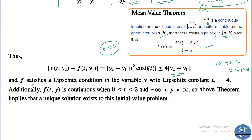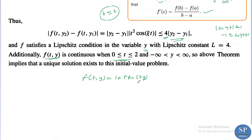Therefore f satisfies the Lipschitz condition in the variable y with Lipschitz constant L = 4. Also, f(t, y) = (1 + t)sin(ty) is continuous for 0 ≤ t ≤ 2 and -∞ < y < ∞, because the trigonometric function sin(ty) is continuous and t is a continuous function. So f(t, y) is a continuous function on the strip. We have obtained that f is continuous and f satisfies the Lipschitz condition, so by the above theorem, the initial value problem has a unique solution.